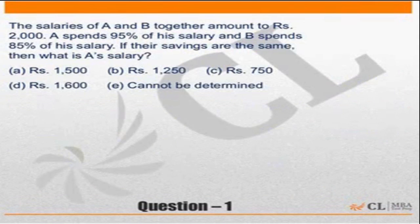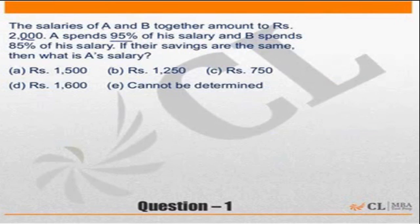First question: the salaries of A and B together amount to 2000 rupees. A spent 95 percent of its salary and B spent 85 percent of its salary. If the savings are the same, what is A's salary?